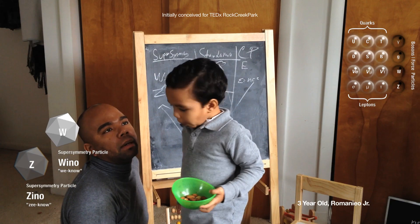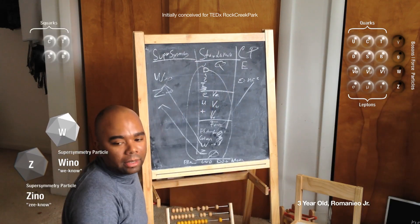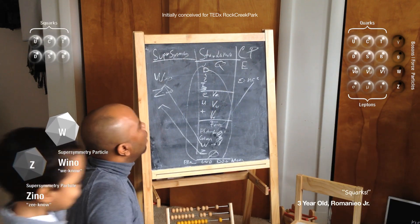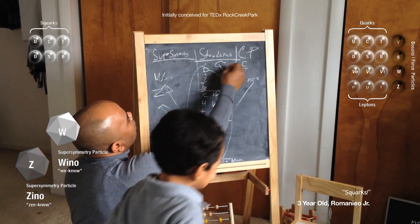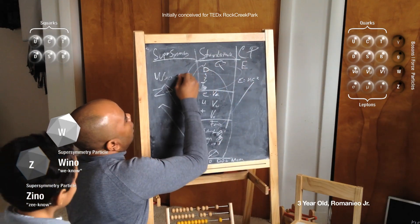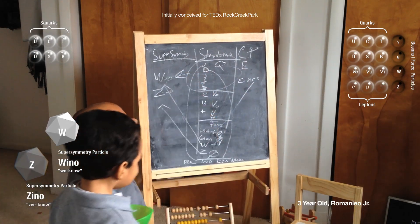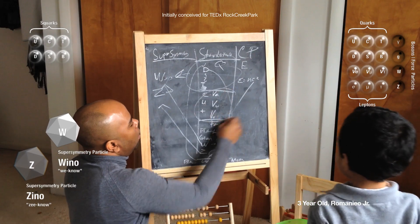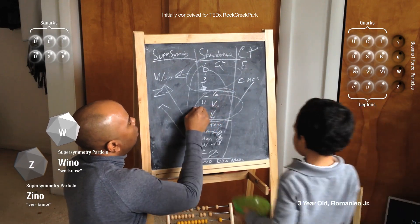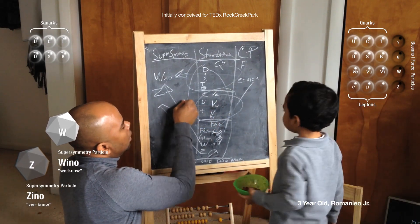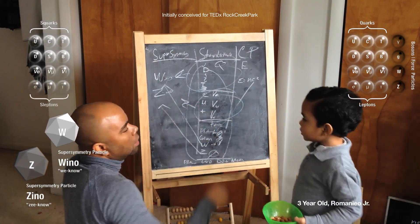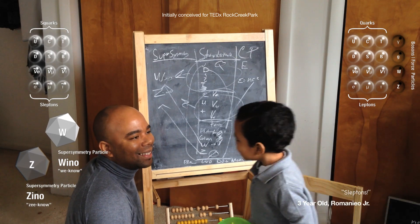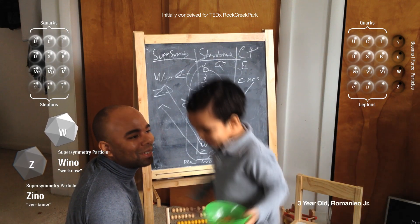What about the quarks in supersymmetry? Squarks. And what are the leptons called when we're dealing with supersymmetry? Sleptons. That's interesting, right?